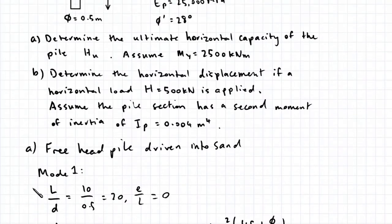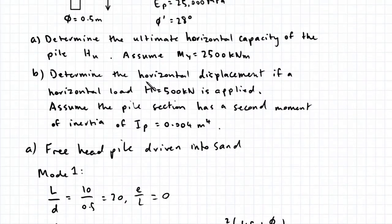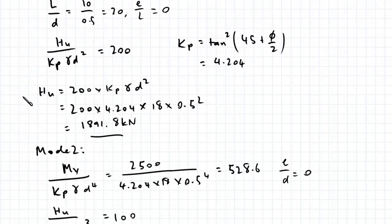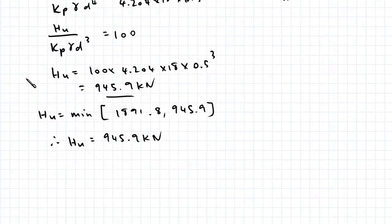In part B, we need to determine the horizontal displacement. H is equal to 500 kN, and the second moment of area of the pile is 0.004 meters to the power of 4.